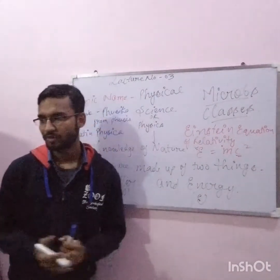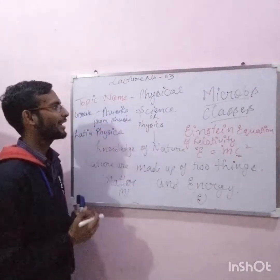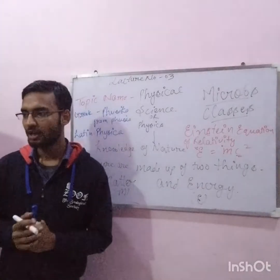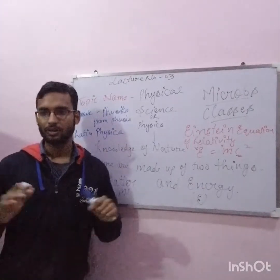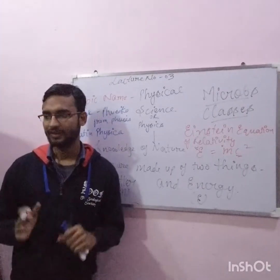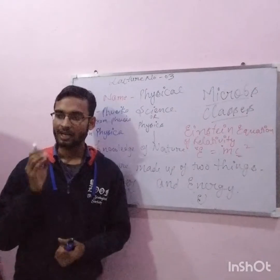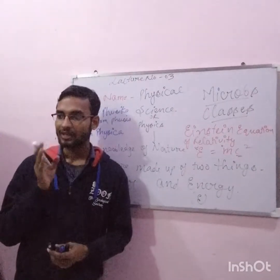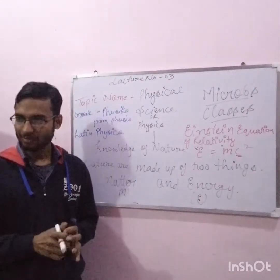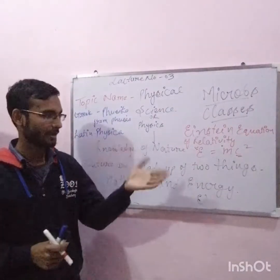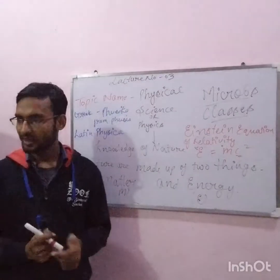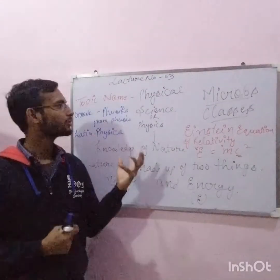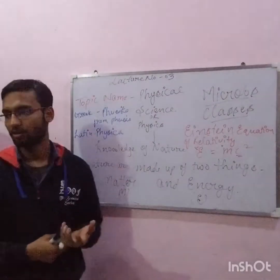In the second lecture, we told you about the branch of science. We classified the branches of science — our main topic was science, and from science we learned about its branches. Now we will learn about physics, and we will also learn about chemistry and biology.